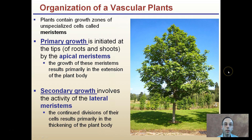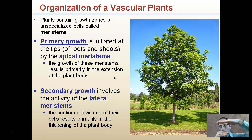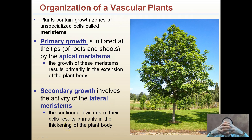Looking in general, plants contain growth zones of unspecialized cells called meristems. Primary growth is initiated at the tips of roots and shoots by the apical meristems. The growth of these meristems results primarily in the extension of the plant body — so we're looking at growing taller. Secondary growth involves the activity of lateral meristems, and continued divisions of their cells results in thickening of the plant body.